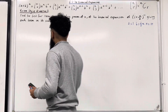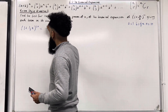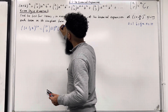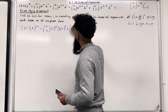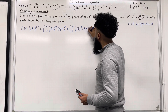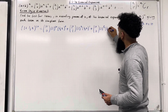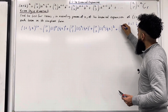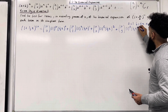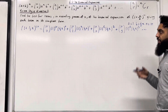(1 plus one-half x) to the power 10 is given by: 10 choose 0, times 1 to the power 10, times (one-half x) to the power 0, plus 10 choose 1, times 1 to the power 9, times (one-half x) to the power 1, plus 10 choose 2, times 1 to the power 8, times (one-half x) to the power 2, plus 10 choose 3, times 1 to the power 7, times (one-half x) to the power 3, dot dot dot. The expansion continues — we only want the first four terms.